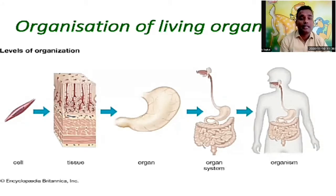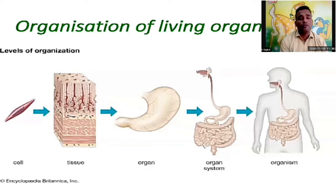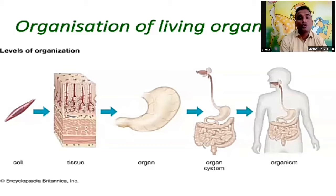When many tissues come together and work together, that forms an organ. In our body many organs are there — interior and exterior organs like the kidney, heart, lungs, intestines, esophagus, and brain. Whenever many organs come together and form an action, that forms an organ system. In our body there are a number of organ systems — skeletal system, muscular system, nervous system, blood circulation system, reproduction system, and expiration system. Because of all these systems together, one body — the human organism — exists.